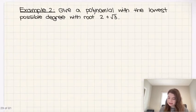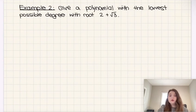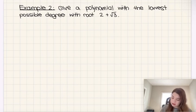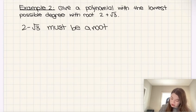All right, let's do example two. It says give a polynomial with lowest possible degree with root 2 plus root 3. So first things first, we need to also state that 2 minus root 3 must be a root as well, based on our irrational conjugates theorem.